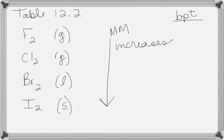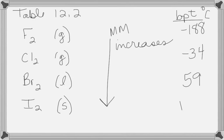Table 12.2 in your book lists boiling points in degrees Celsius. Fluorine has a boiling point of -188°C, chlorine is -34°C, bromine is 59°C, and iodine is 184°C. You don't memorize those, but do you see how looking at boiling points gives the same kind of thought process as looking at phases? Higher molar mass means stronger dispersion forces, which means a higher boiling point. Stronger dispersion increases the boiling point.